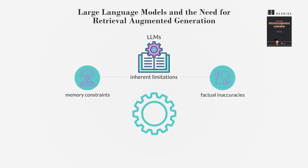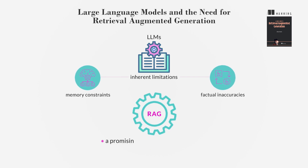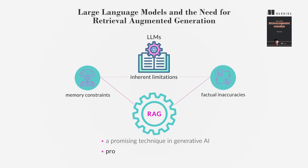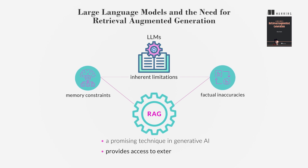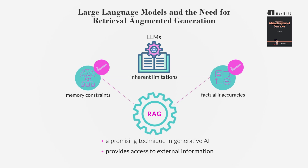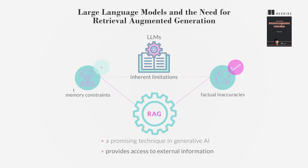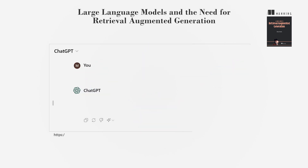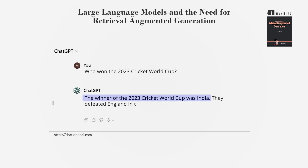Retrieval Augmented Generation, RAG, is a promising technique in generative AI that addresses these limitations by providing access to external information, thereby improving the reliability and accuracy of the generated text. For instance, if ChatGPT is asked who won the 2023 Cricket World Cup, it might not be able to generate an answer or, worse, give an incorrect answer.